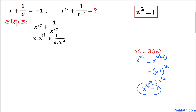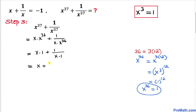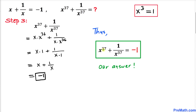Reverting back to our original problem, we replace x to the power 36 with 1 in both terms. So the expression becomes x times 1 plus 1 over x times 1, which simplifies to x plus 1 over x. We know from our original equation that x plus 1 over x equals negative 1. Therefore, x to the power 37 plus 1 over x to the power 37 equals negative 1.